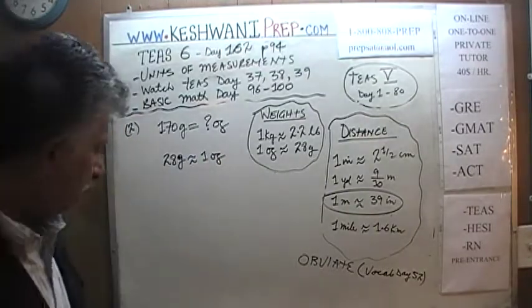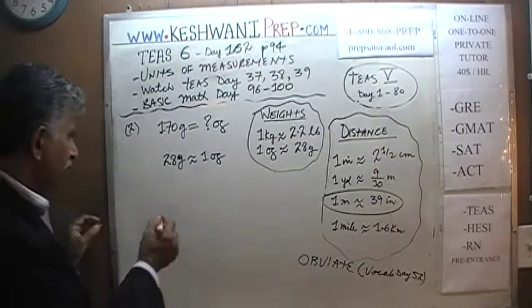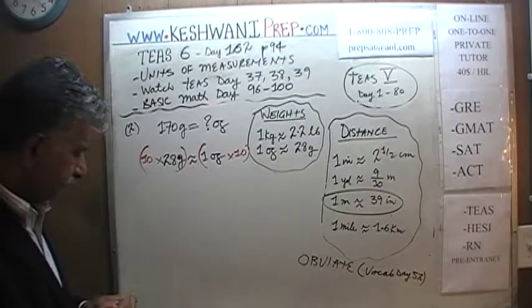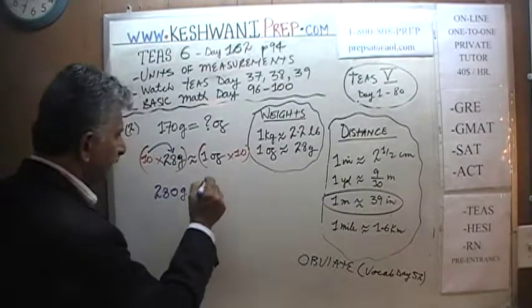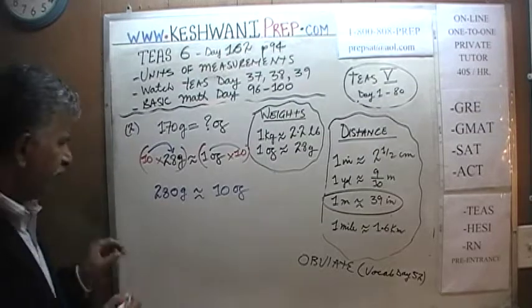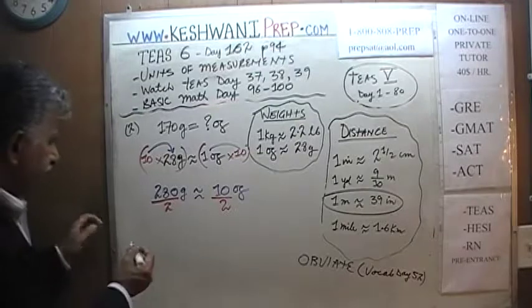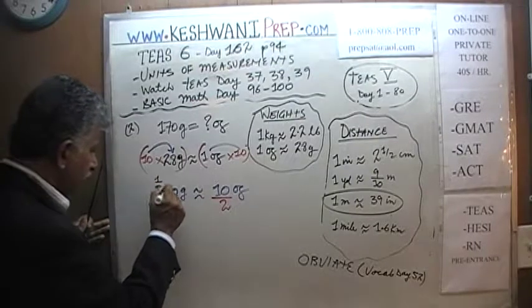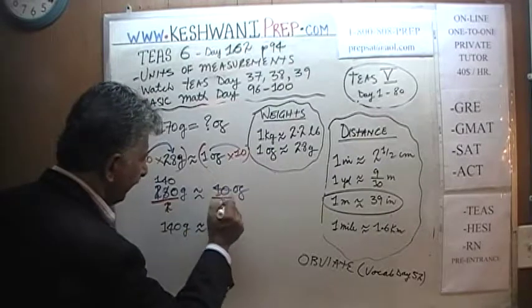We need to get from 28 grams to 170 grams. First, multiply both sides by 10: 10 times 28 is 280 grams, which is approximately 10 ounces. But 280 is too much — we only need 170. So let's take half: divide both sides by 2. 280 divided by 2 is 140, and 10 divided by 2 is 5. So 140 grams is approximately 5 ounces.